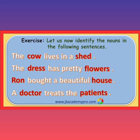Third sentence: 'Ron bought a beautiful house.' Ron is a person, and house is a place which Ron has bought. Fourth sentence: 'A doctor treats the patients.' Doctor comes in the persons category — the one who treats the patients. Patients also come in the persons category. I hope you have all got my points regarding nouns.